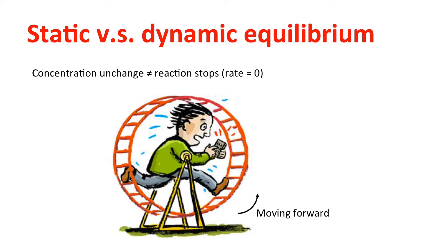Here is a picture that can help you understand. This gentleman is running really hard — he is trying to move forward, so the forward reaction rate is not equal to zero. But at the same time, a treadmill moves him backward. When the backward speed equals the speed the man moves forward, he never changes his position. This is also called dynamic equilibrium.